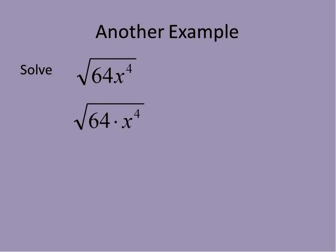64x to the power of 4. 64 is a perfect square. x to the power of 4 is a perfect square. This example is actually pretty nice for us because we can take the square root of 64 and get 8. We take the square root of x to the power of 4 and we get x squared. So our final answer is going to be 8x squared. 64x to the power of 4 is a perfect square, including the variables and exponents.